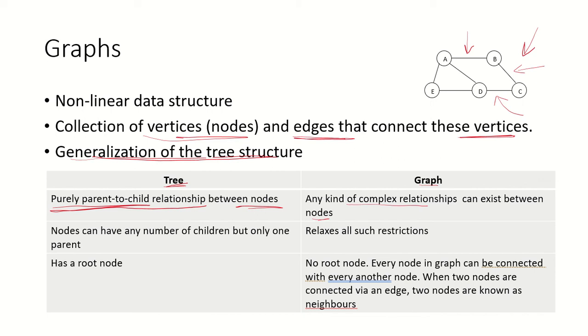In a tree, a node can have any number of children, but there will be only one parent. In a graph, there is no such restriction. If a node is connected to its child nodes, it can have various other relationships with node D again.